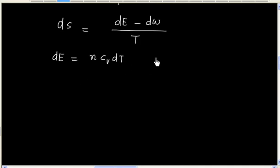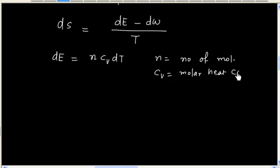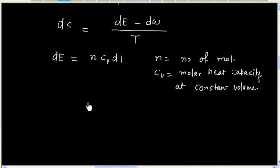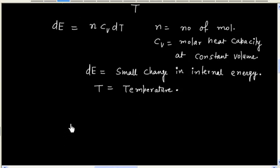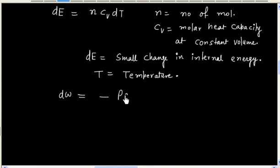In this formula, N denotes the number of moles, Cv denotes the molar heat capacity at constant volume, dE denotes a small change in internal energy, T denotes temperature, and dW equals minus P dV, where P is the pressure and V is the volume.